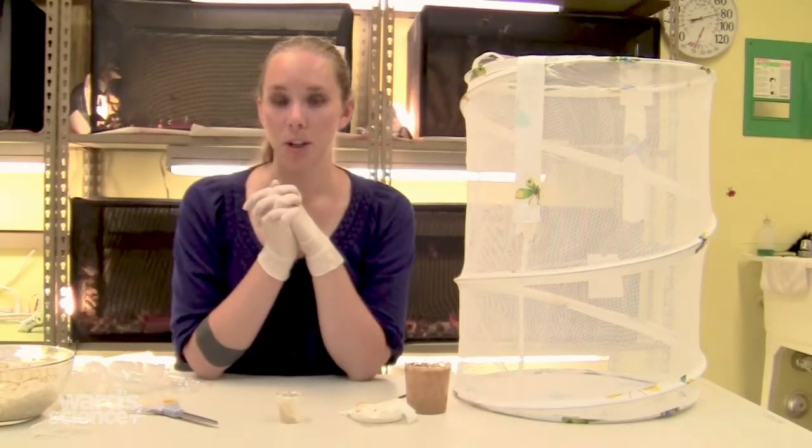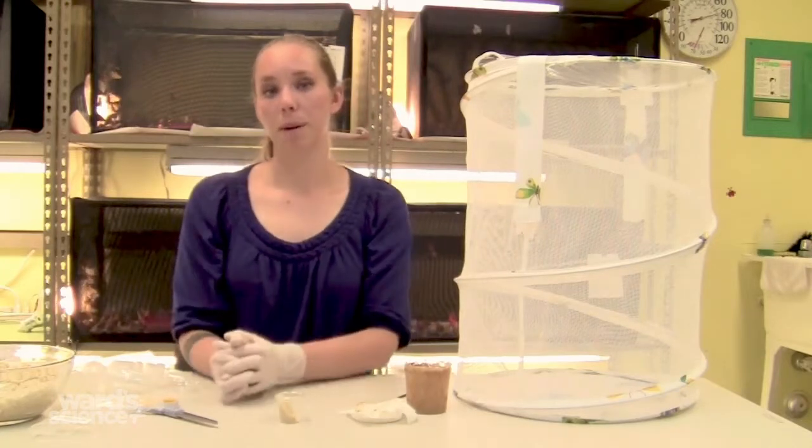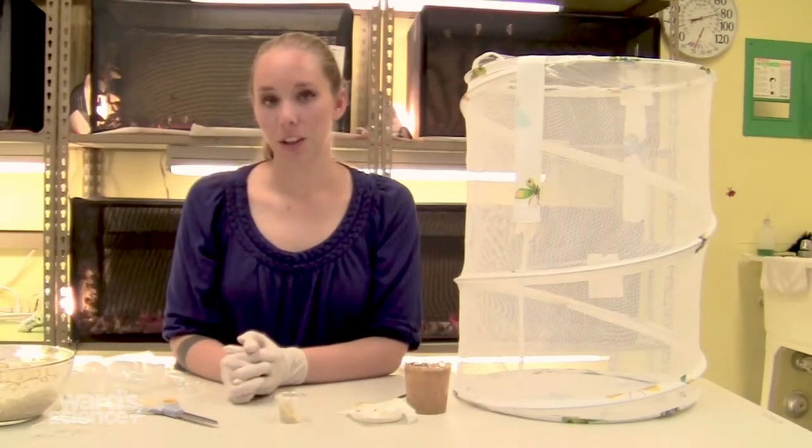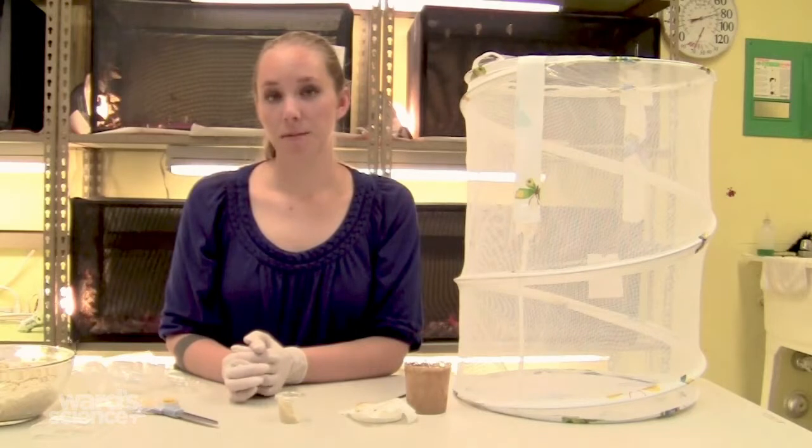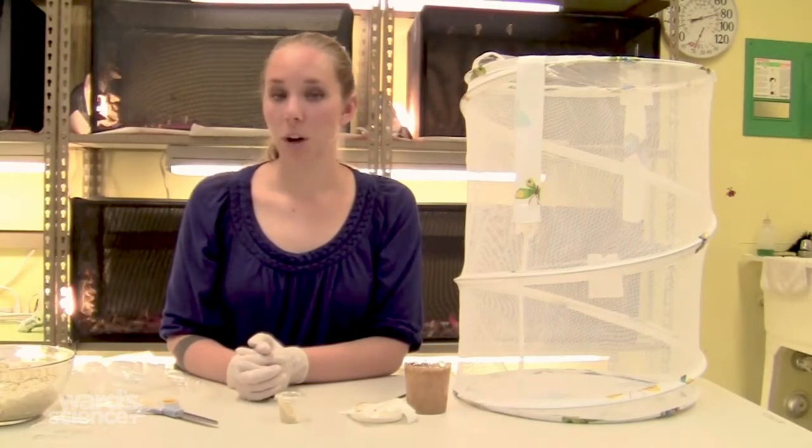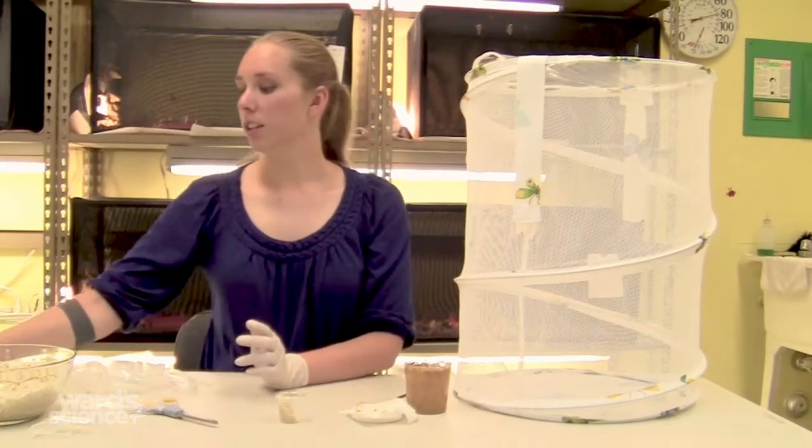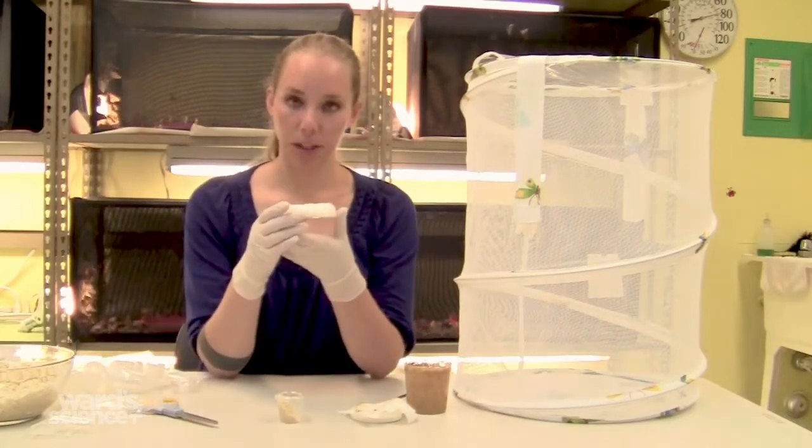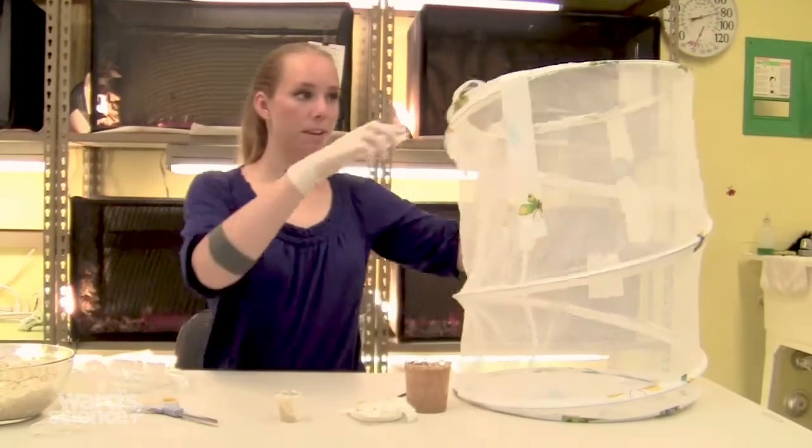After all your butterflies have emerged, you can provide a food source for them by making a sugar water mixture. To make this mixture, you can mix 5 tablespoons of sugar with 1 cup of water. You can then put this solution on some cotton balls in a shallow plastic dish and put it in the bottom of your cage.